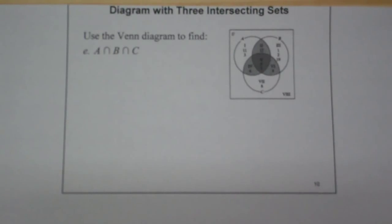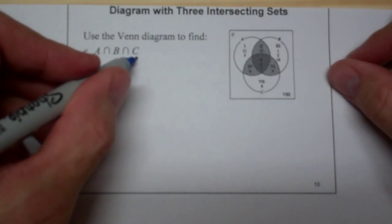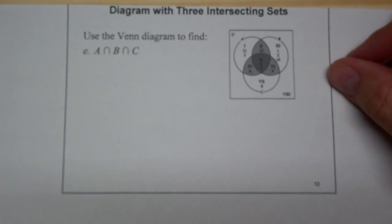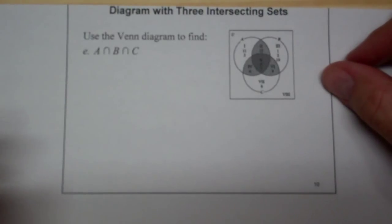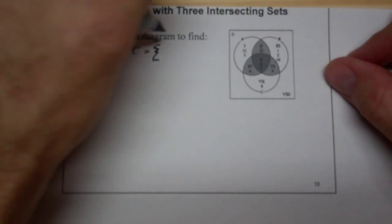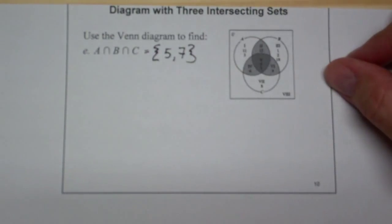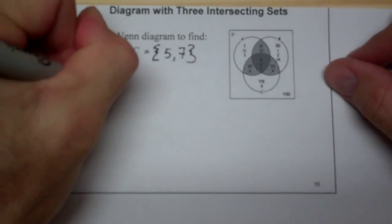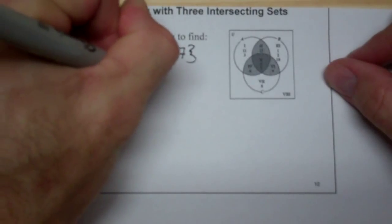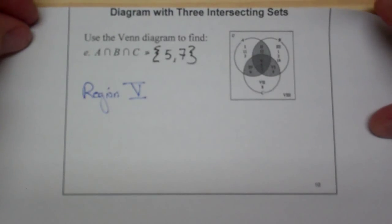For example E, if you have A intersect B intersect C, this is all three sets at the intersection of all three. What we said the intersection of all three sets was is just region 5, and that's going to be the elements 5 and 7. With two intersections, the set keeps getting smaller as you keep applying the intersection operation.